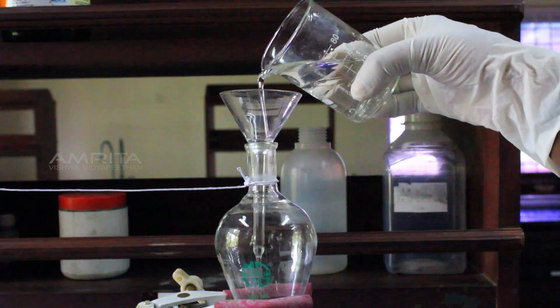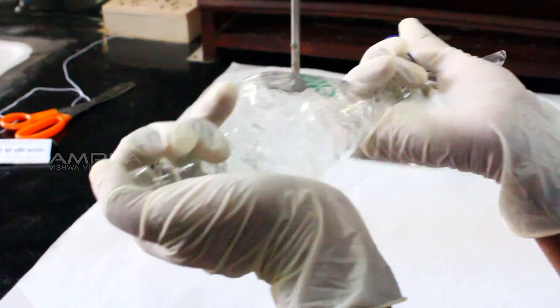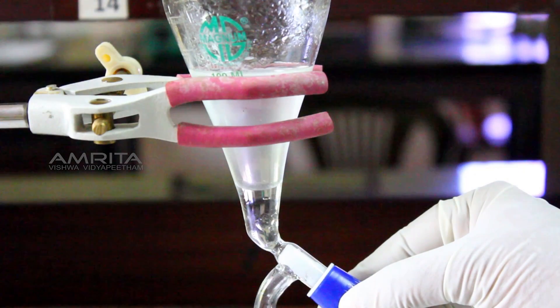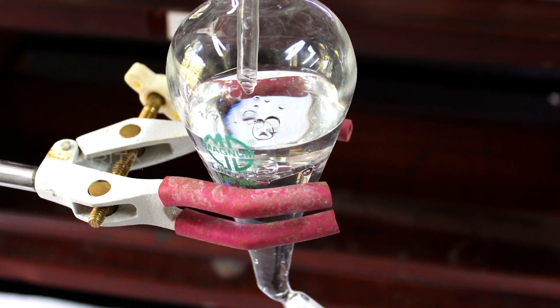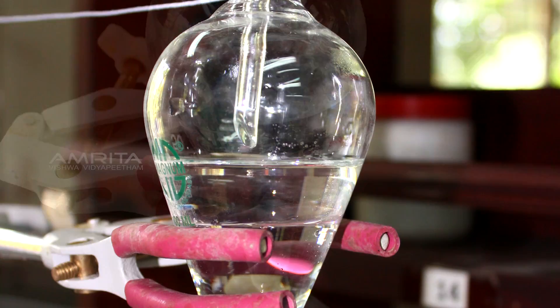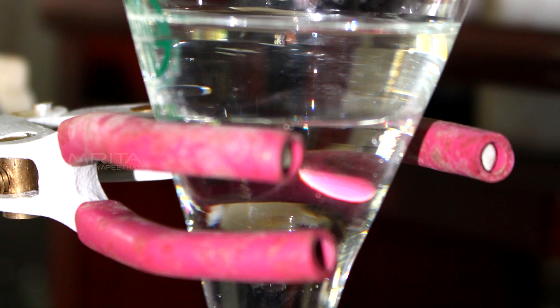From this experiment, we can infer that the immiscible liquids separate out in layers depending on their densities. Since water is the denser liquid, it falls to the bottom and forms the lower layer. As oil is the lighter liquid, it forms the top layer.